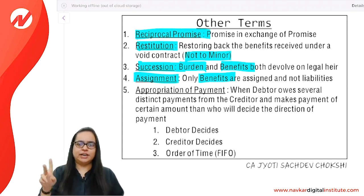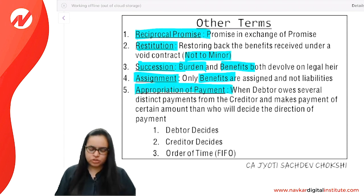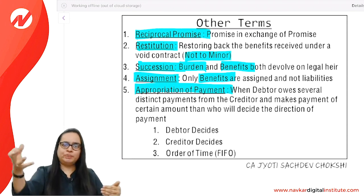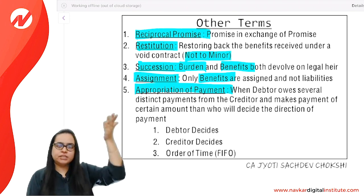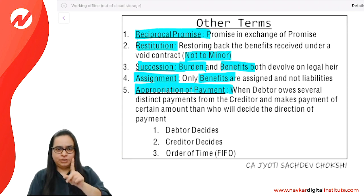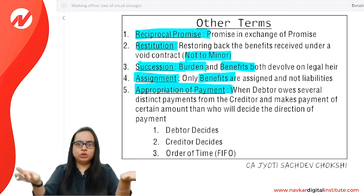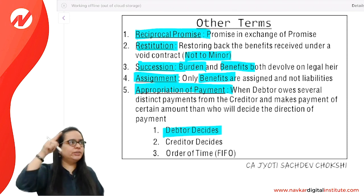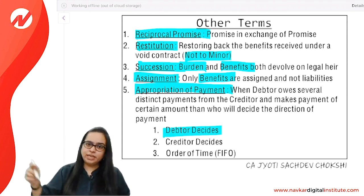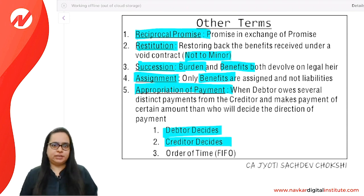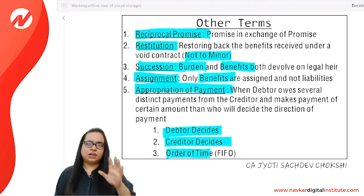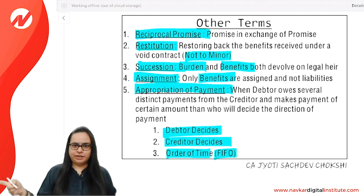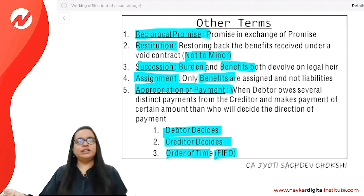Appropriation of payments: if goods were sold across multiple months and the debtor is paying now, how do you allocate the payment? First right belongs to the debtor — they tell you which invoice to adjust. If they don't say, the creditor decides. If neither decides, it follows order of time — FIFO, first in first out.